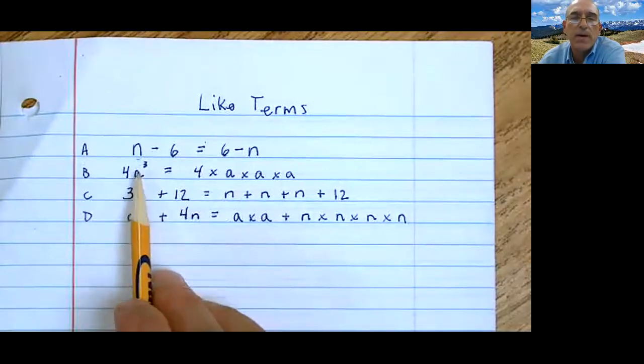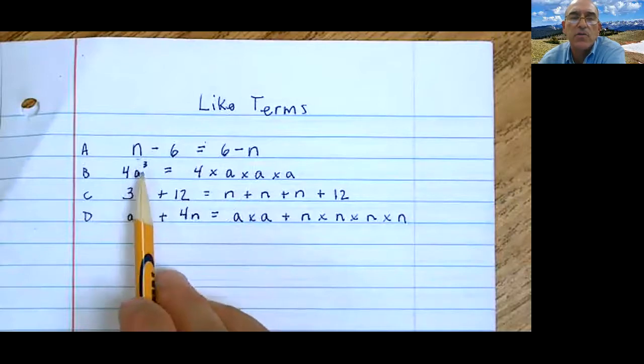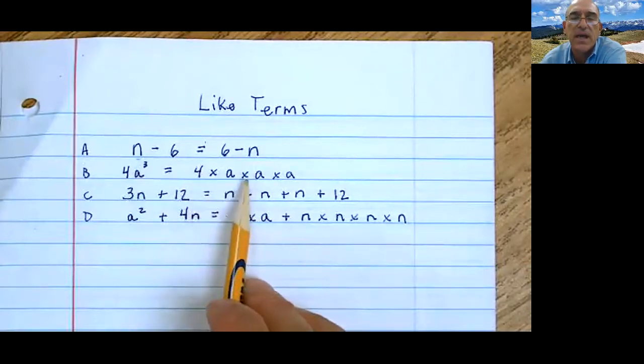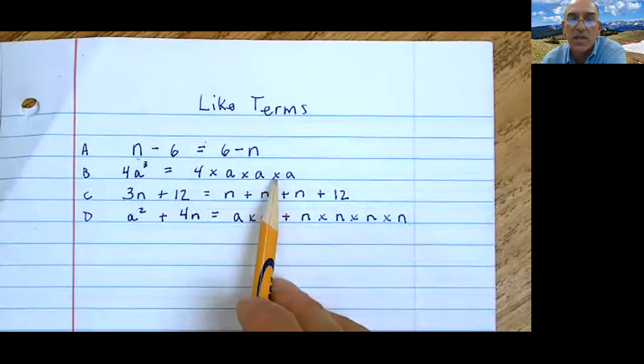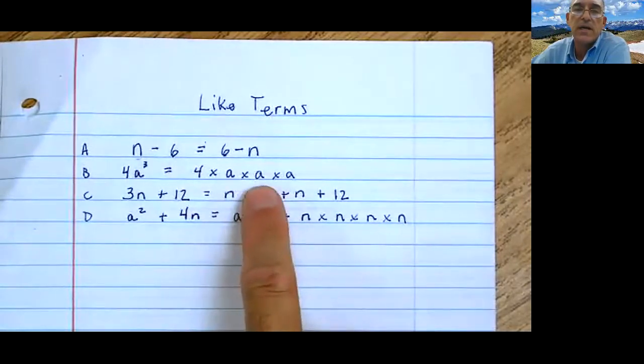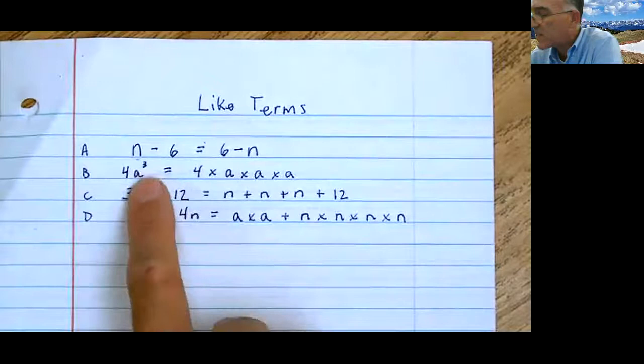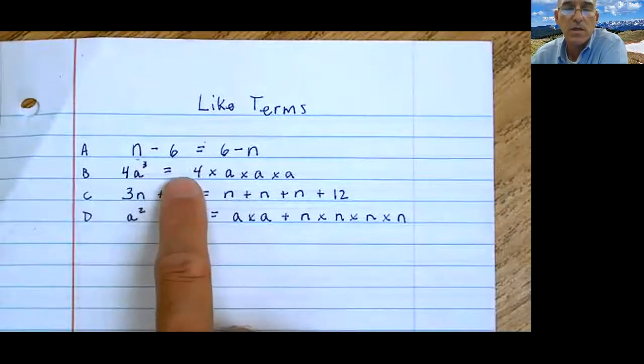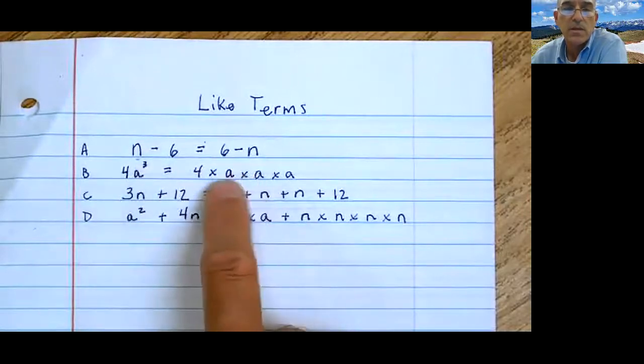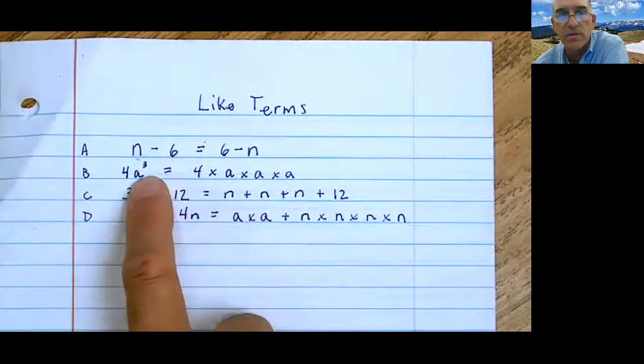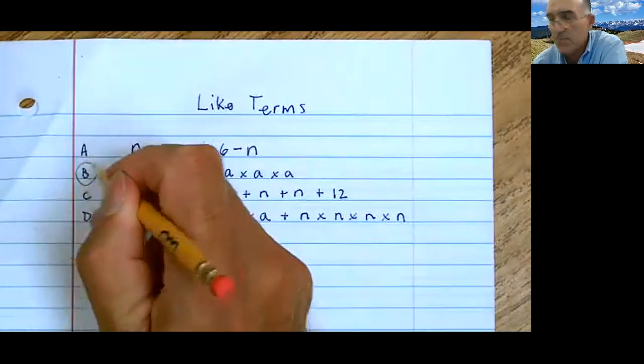4a to the third power - is that the same as 4 times a times a times a? I think it is. Because notice, if you were to just look at the a's, a times a times a is that, that's a to the third. And it's being multiplied by 4. So this is a true statement. What you see here is they're all spread out on the right side, and they combined like terms right there. So it's been combined, so you'd say this one is true.